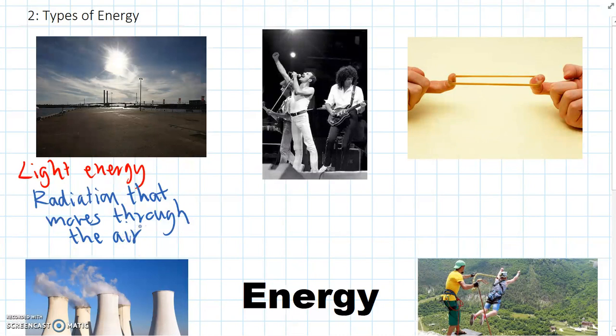And it also moves through space too, as we know, because light moves from the sun and hits Earth, and that's why the sun's so bright, and that lets everybody see.